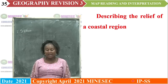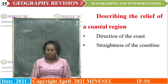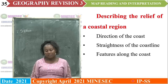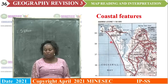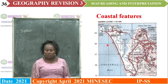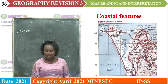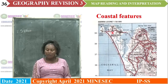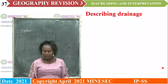Describing the relief of a coastal region — you identify the direction of the coast, say whether the coast is straight or not, then bring out some of the features along the coast — erosional or depositional. The direction of this coast is north-south. The direction of this other coast is west to east. This coast is straight, and this other coast is indented — look at the indentations: water gets into land, land projects. Then the landforms — we have caves, bays; along this coast we have a beach.